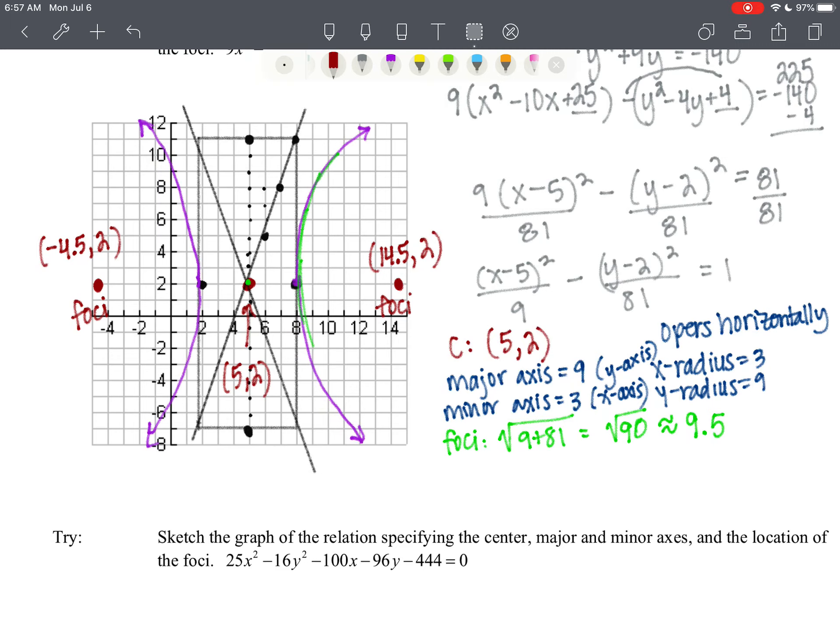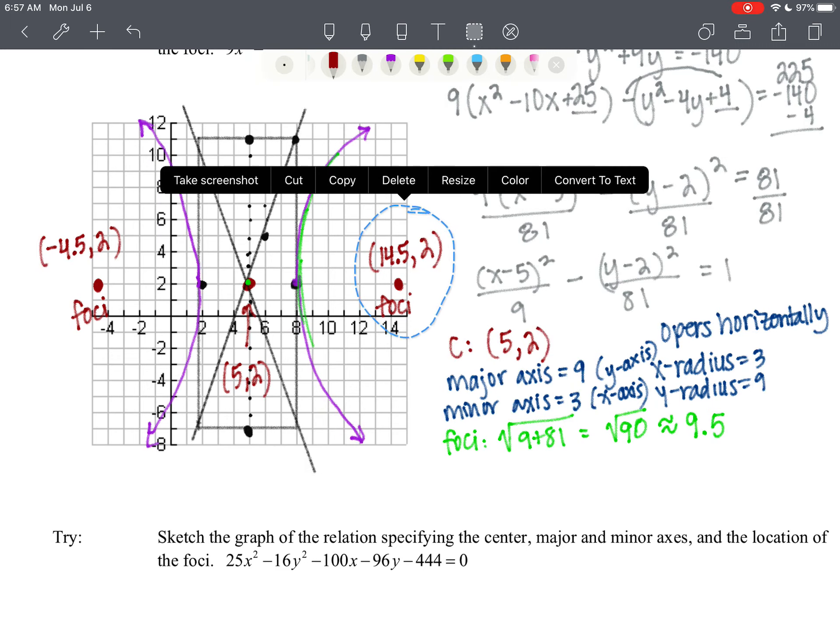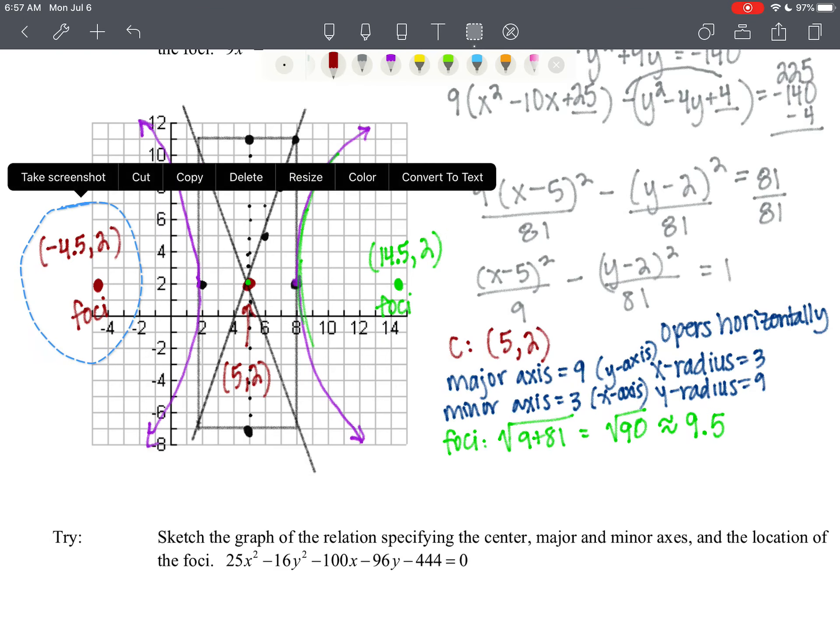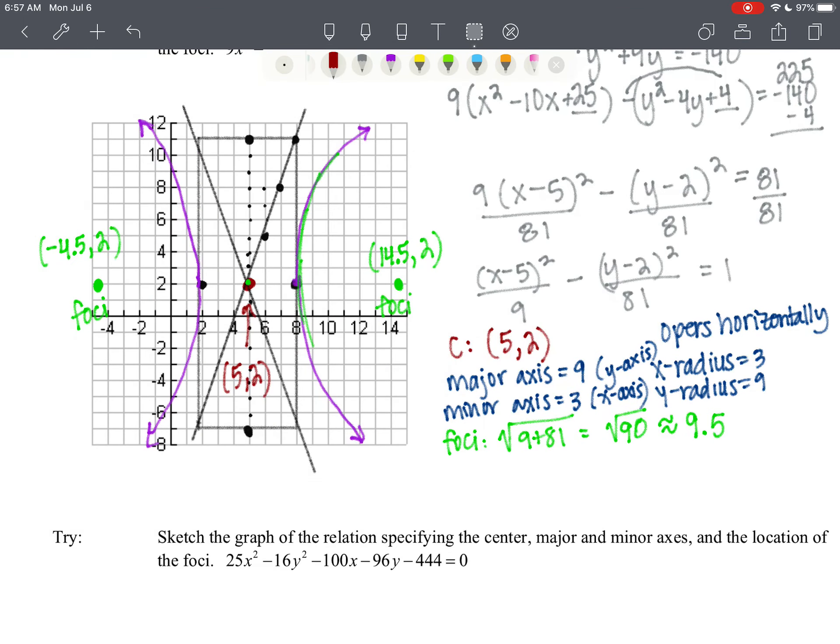Now I'm going to change the color of it so that everything is the same color. I like to be color coordinated here. And that leaves us our asymptotes. So our asymptotes have a slope. Asymptote slope is equal to positive 3, up 9, right 3, so positive 3 and negative 3. And this time I'm going to go through the center of 5, 2.